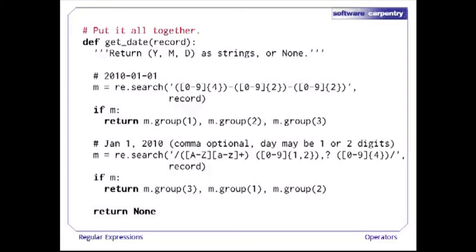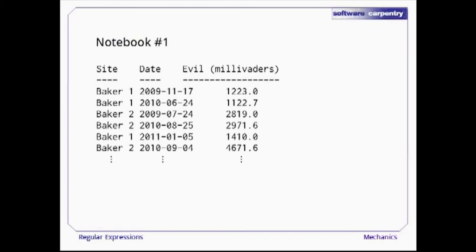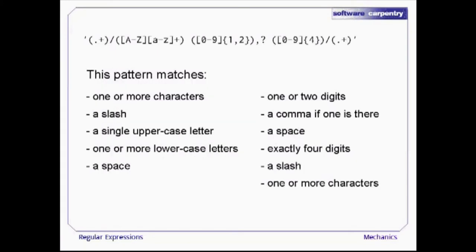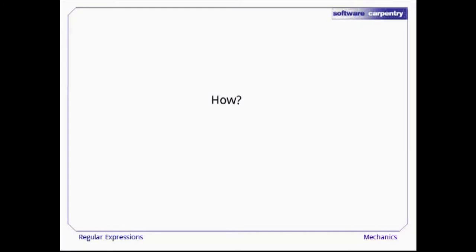In the last episode, one of the regular expressions we came up with was a complex beast matching one or more characters, a literal slash, an uppercase character and one or more lowercase characters, a space, one or two digits, an optional comma, another space, exactly four digits, another slash, and one or more characters. That's a pretty complex match. The answer to how it works is that regular expressions are implemented using finite state machines.